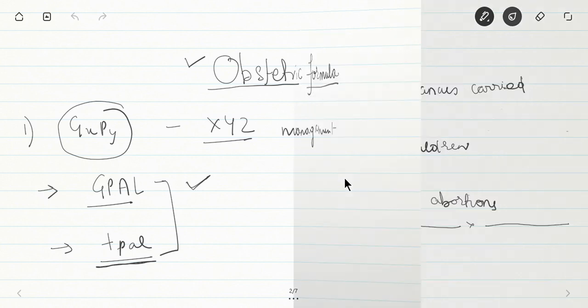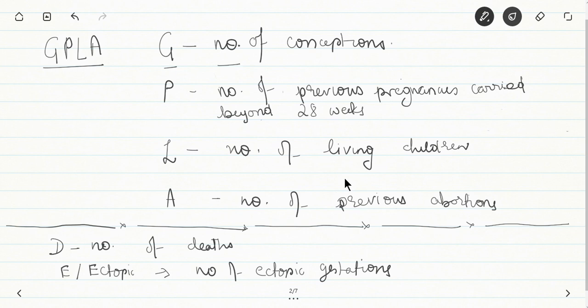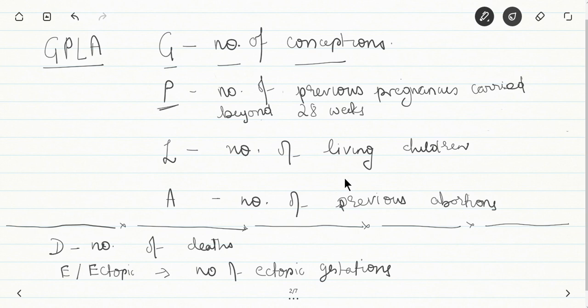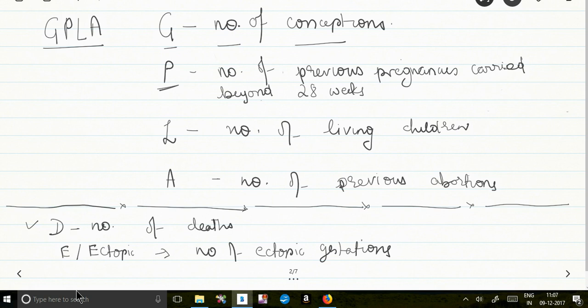In the GPAL formula, G or Gravida stands for number of conceptions, including the current conception — the number of times the patient has been pregnant irrespective of weeks of gestation. P stands for Para, meaning the number of previous pregnancies carried beyond 28 weeks, not including the current pregnancy. L is the number of living children currently. A represents the number of previous abortions. Some also add D for number of deaths among children born, and E or ectopic for number of ectopic gestations.